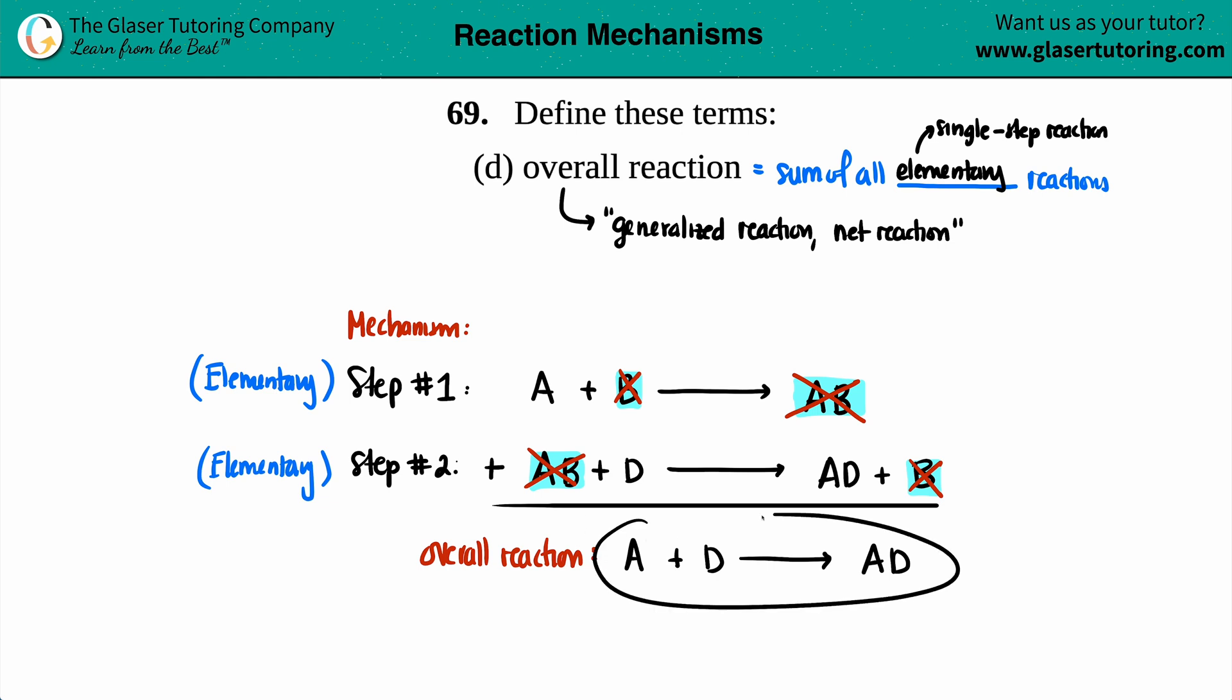But notice how this overall reaction is not identical to the two elementary reactions. So this comes into play where we talk about the rate law. A rate law is not going to be, more chances than not, it's not going to be abiding by the overall reaction. It's going to always abide by an elementary step because that's just a single step. But your rate law should not. I mean, if it does, it's a coincidence. But it shouldn't abide by your overall reaction.